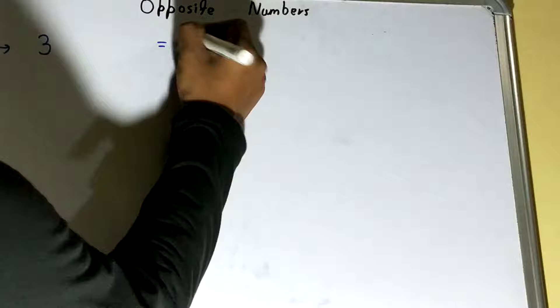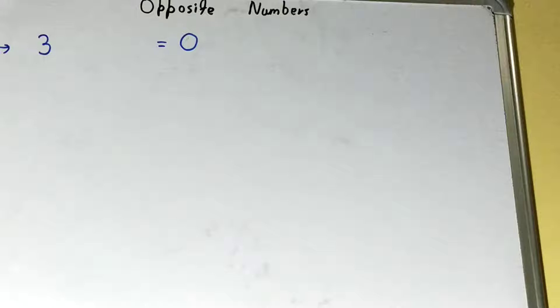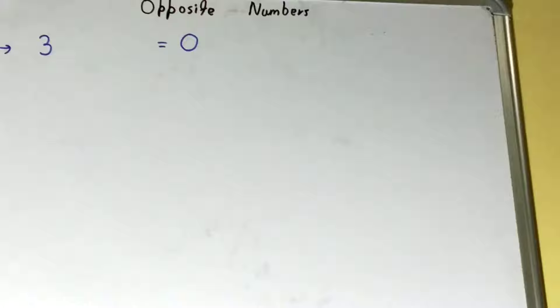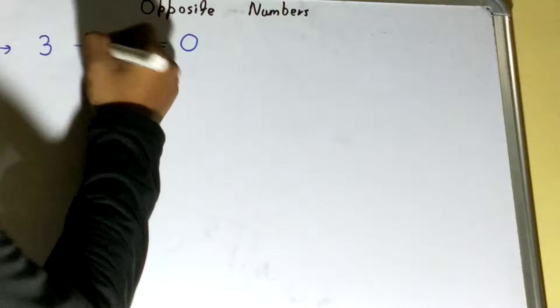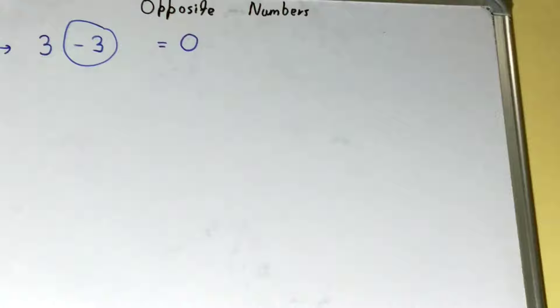For example, you have got 3, and what I told you: if it is a number which you will add to the number, the result will become 0. So what you can add to 3 or subtract to 3 so to get the result is 0?